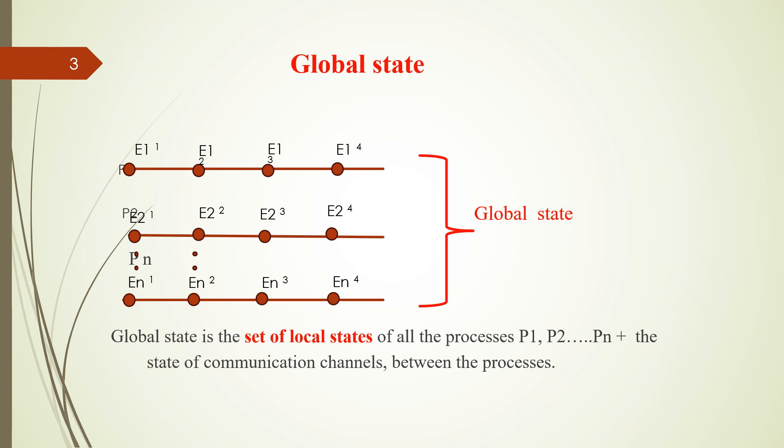What is global state? Global state is the set of local states of all the processes, that is from P1 to Pn, plus the state of the communication channel between the processes. It is called the global state.